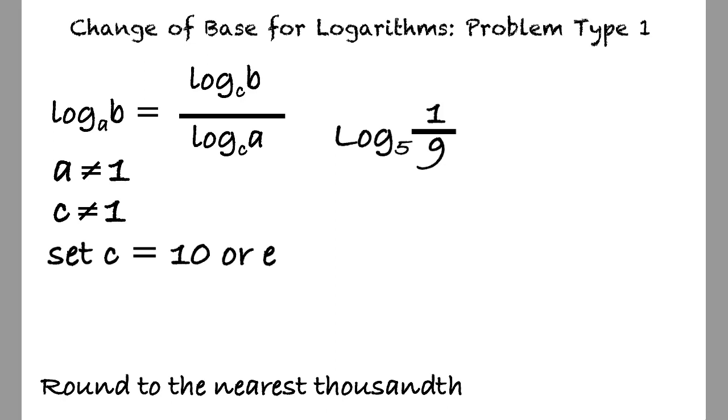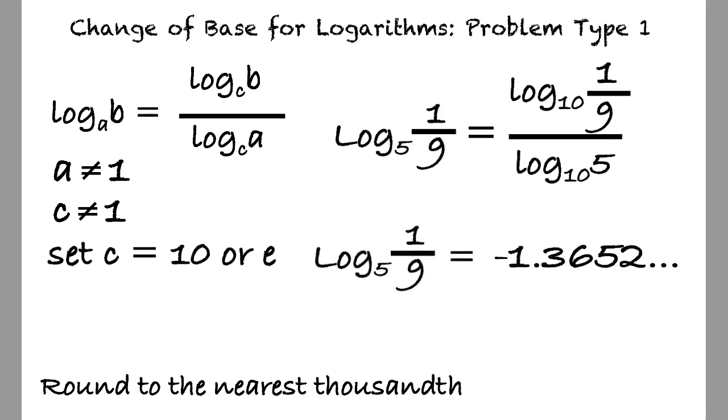We can start by substituting the given logarithm into the change of base formula to result in log base 10 of 1 ninth divided by log base 10 of 5. Solving this equation by inputting the logarithms into the calculator will result in an answer of negative 1.3652. But remember, we need to round to the nearest thousandth, resulting in an answer of negative 1.365.